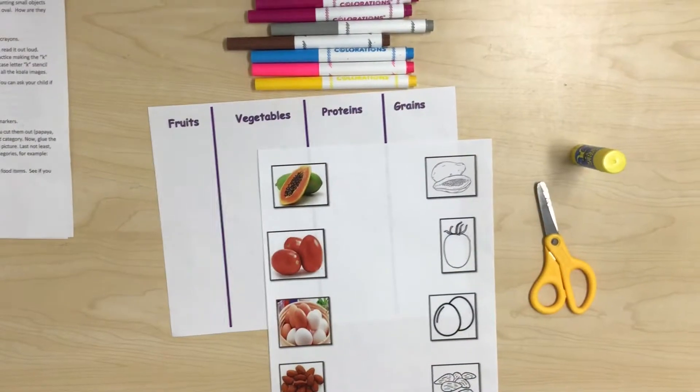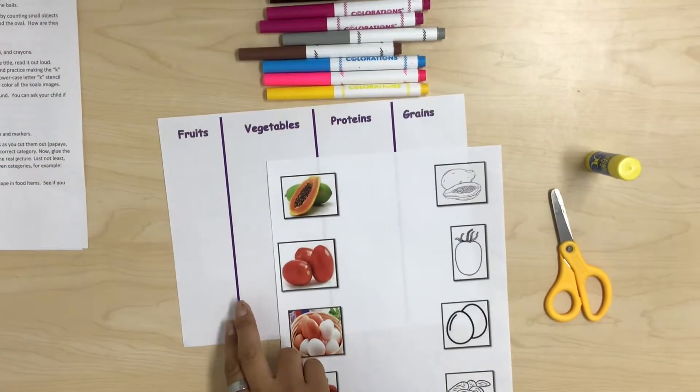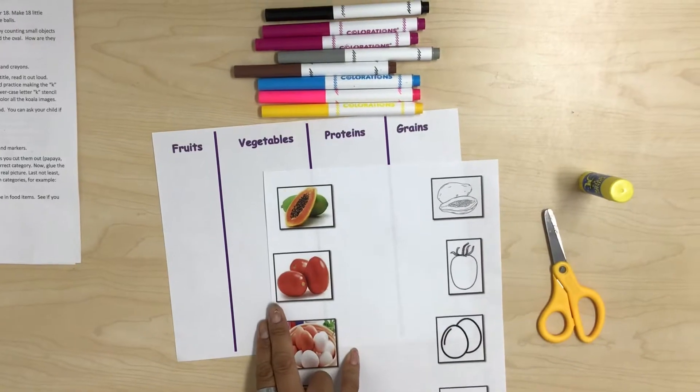I'm Ms. May and today our project is healthy oval shaped foods. For our materials today we have our worksheet, our food image page, glue, scissors, and markers.